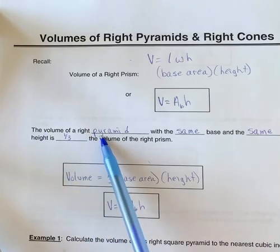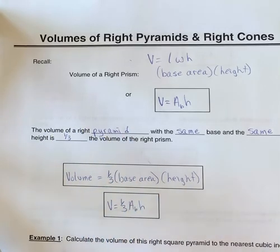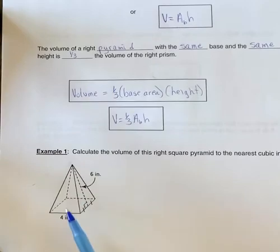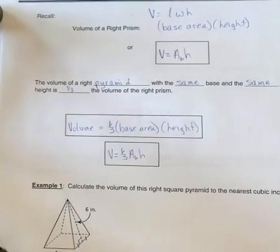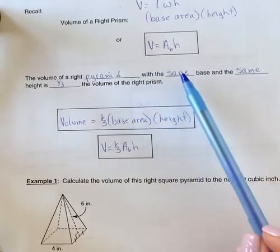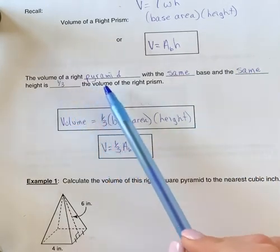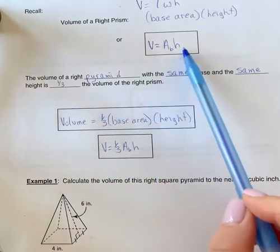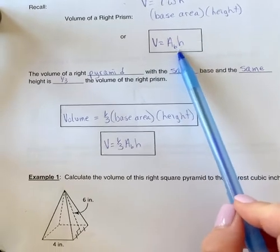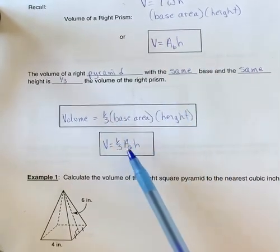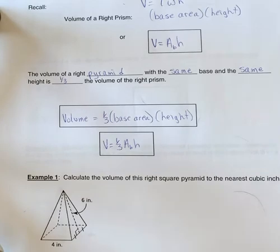If we've got the volume of a right pyramid, so pyramid shape being like this down here, it's a very similar formula. As long as it has the same base and the same height, it's one-third the volume of the right prism. So we'll take this formula right here and we'll just put a one-third in front. So volume equals one-third of area of the base times height.